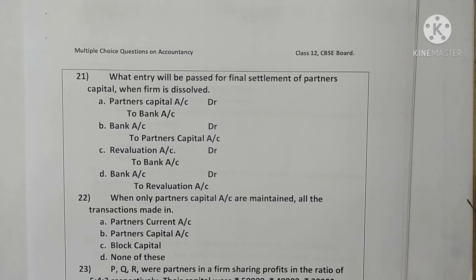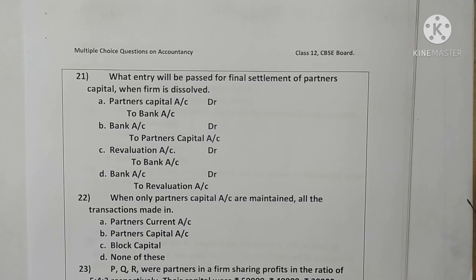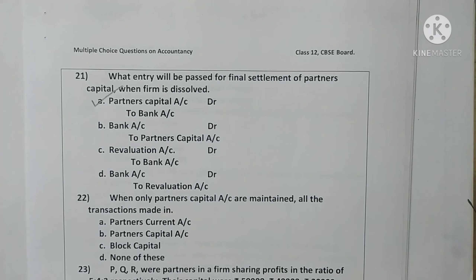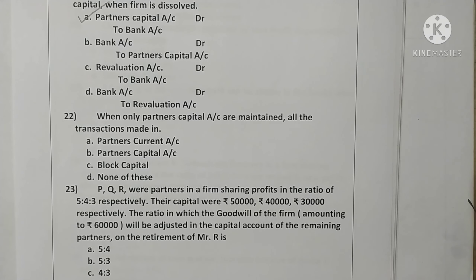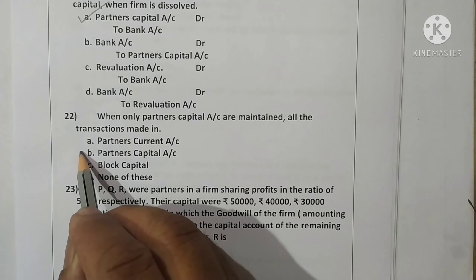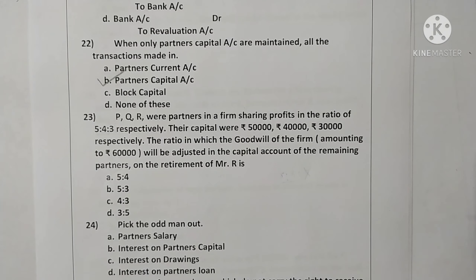Question twenty-one: what entry will be passed for final settlement of partners' capital accounts when the firm is dissolved? The accounting entry will be Partners' Capital Account debit to Bank Account. Option A is correct. Question twenty-two: when only partners' capital accounts are maintained, all transactions are made in partners' capital accounts. Option B is correct.